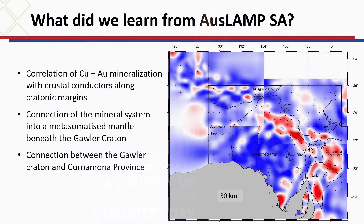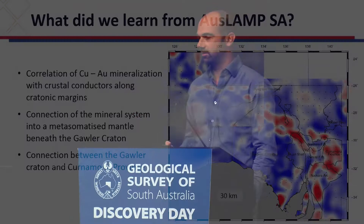What did we learn from OSLAMP? There are many things, but I want to highlight three that we did not know before. First is the fundamental correlation of a lot of the copper-gold mineralization in South Australia and how it correlates with some of these crustal conductors — seemingly deep at 30 kilometers, but still a first-order correlation, which is really remarkable. We learned a lot about cratonic margins and how they control deformation leading to low resistivity. The second key learning, which follows on from what Clare was discussing, is the connection of the mineral system concept — from the ore deposit at surface into a metasomatized mantle signature in the Gawler Craton, which has a mantle signature distinctly different from many other Archaean cratons worldwide.